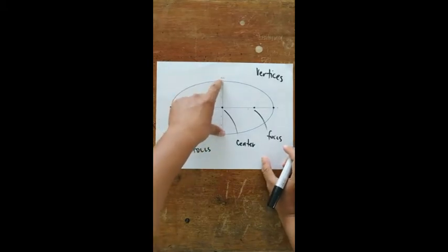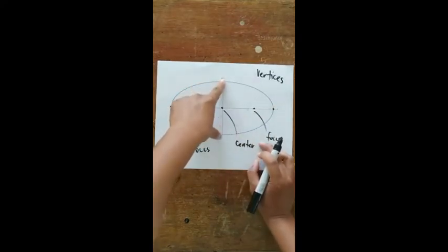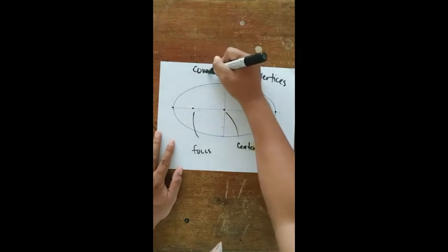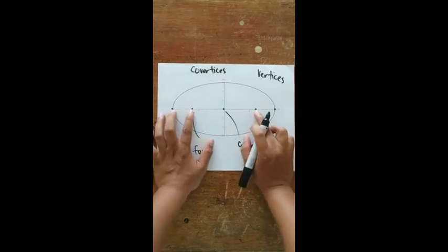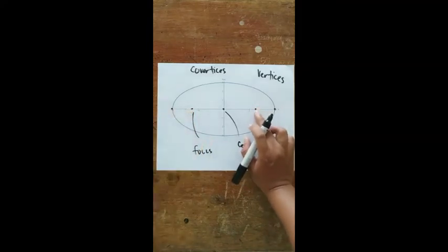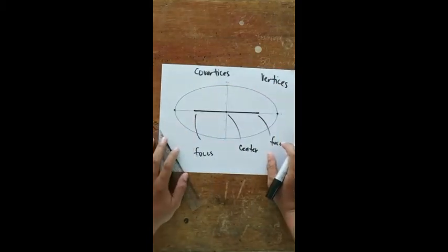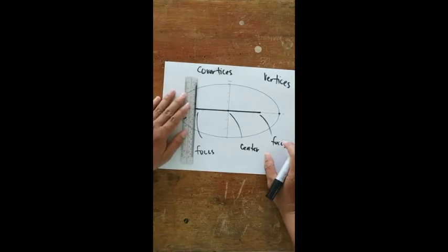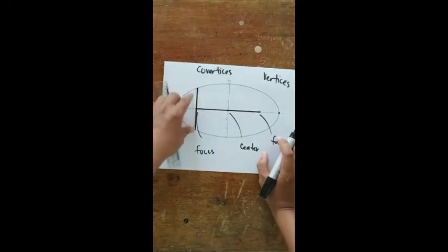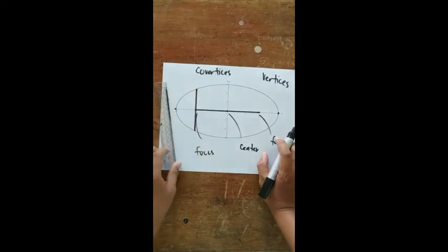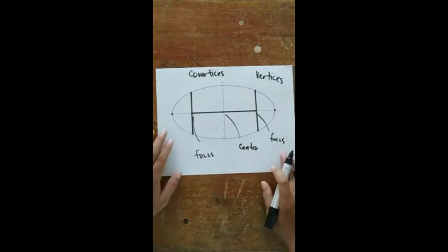This is called the minor axis. The endpoints of the minor axis are called co-vertices. We also have a line between the two foci, which is called the principal axis. We also have a perpendicular line to the principal axis that passes through a focus — this is called the latus rectum.